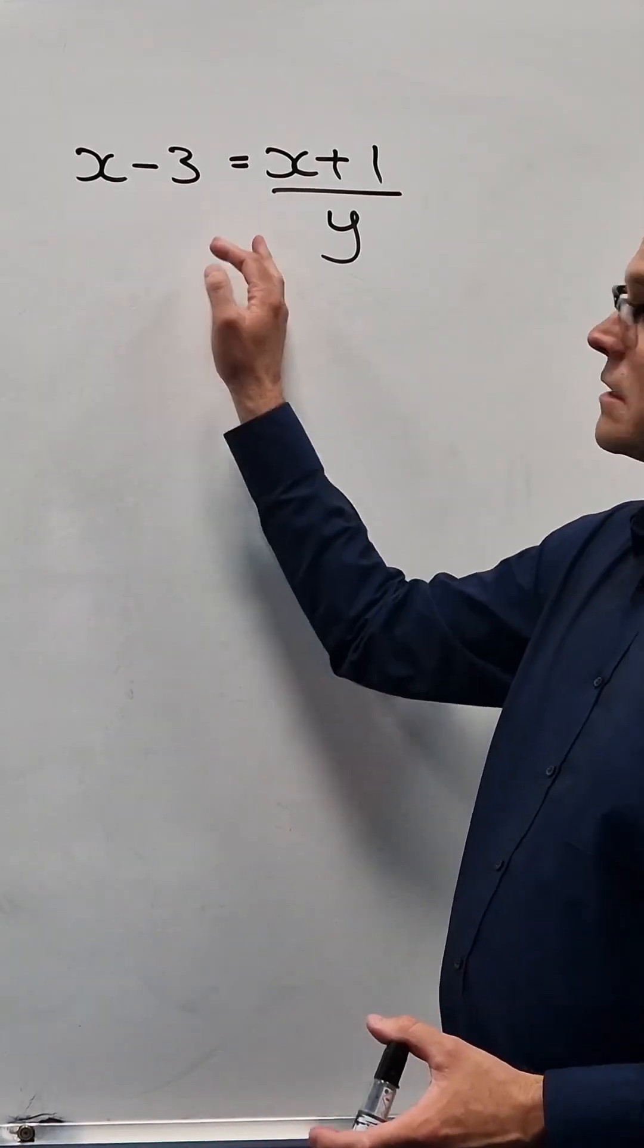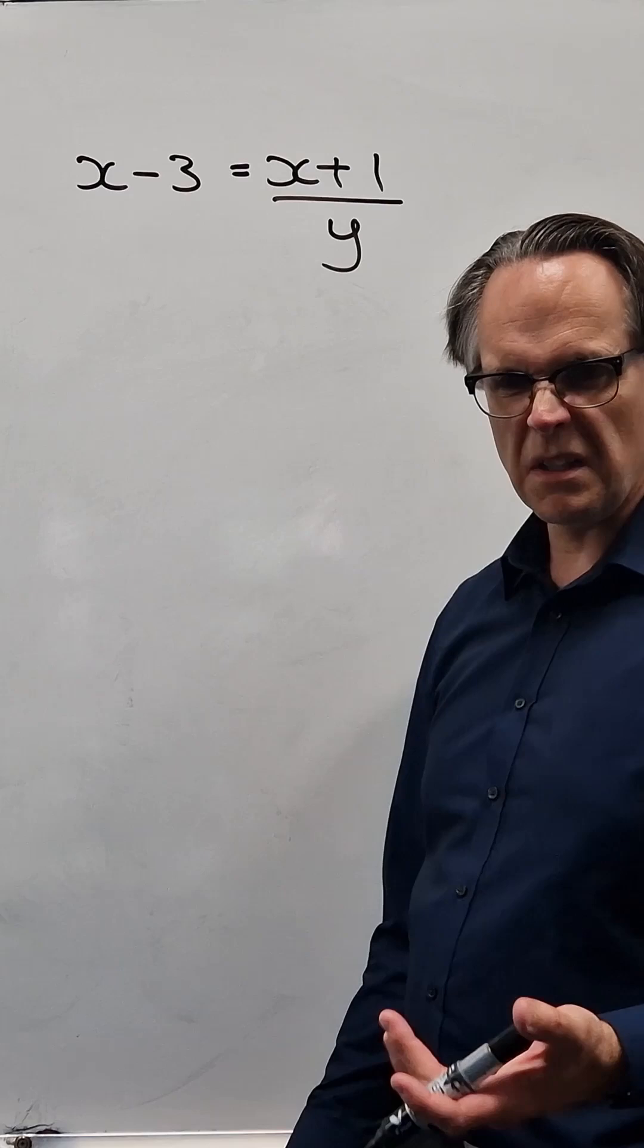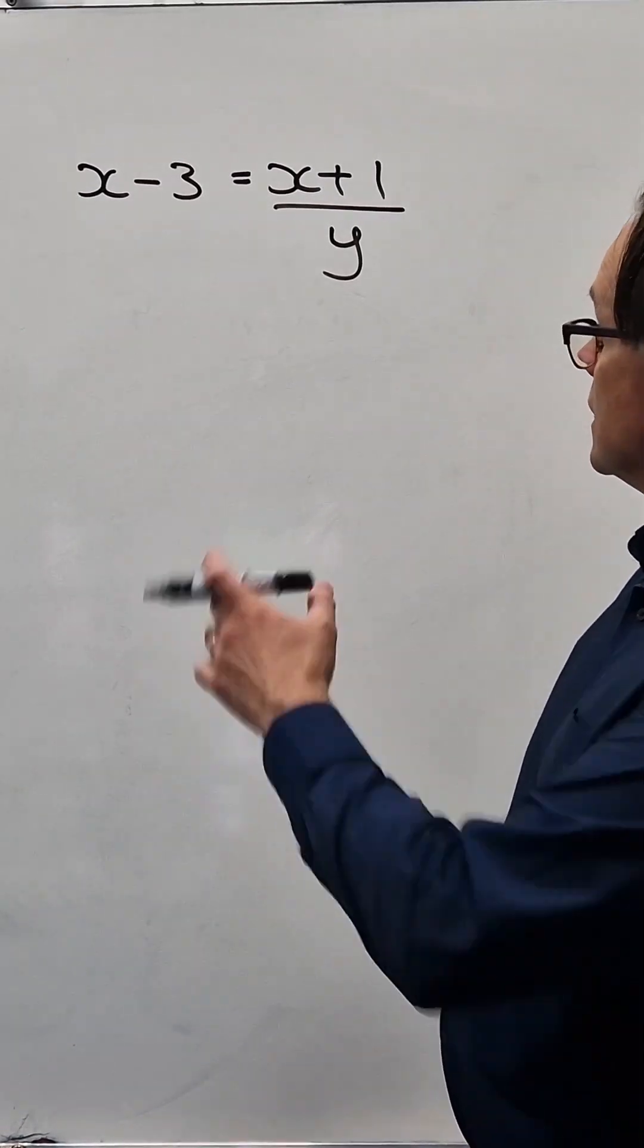Let's say you want to make X a subject but X appears on both sides of the equation. Sometimes this looks a bit difficult but there's a standard method to do it which is this.